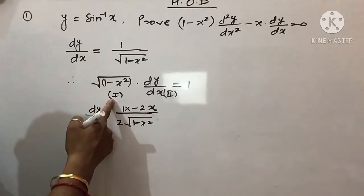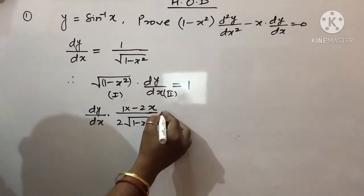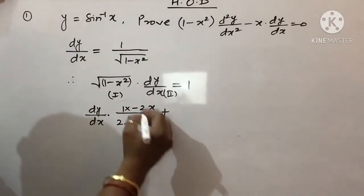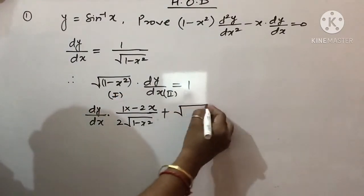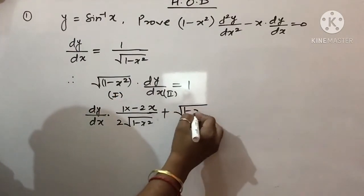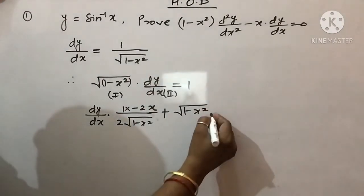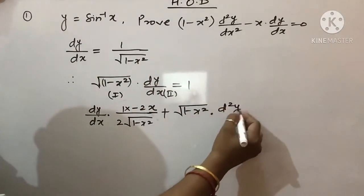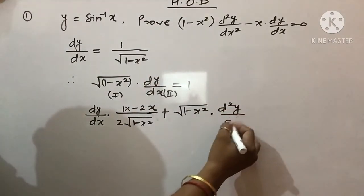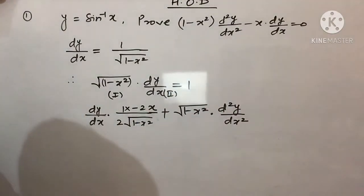My first function is differentiated; now the turn is of the second function. Second function will differentiate, first function will be out. So dy/dx differentiates to d²y/dx². And this is the constant function 1, and 1 differentiated with respect to x gives 0.